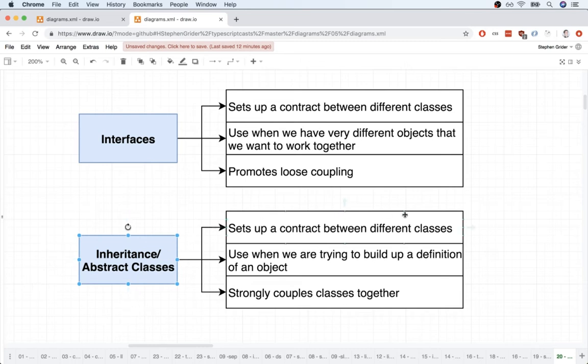With an abstract class, it makes it really easy for us to set up a contract between different classes as well. But this is way more about inheritance and trying to make use of some methods from a parent class on a child one. The downside to this is that it really strongly couples different classes together.